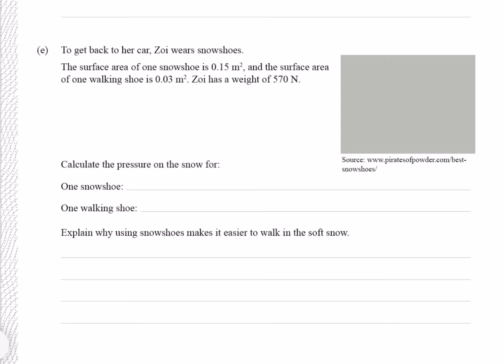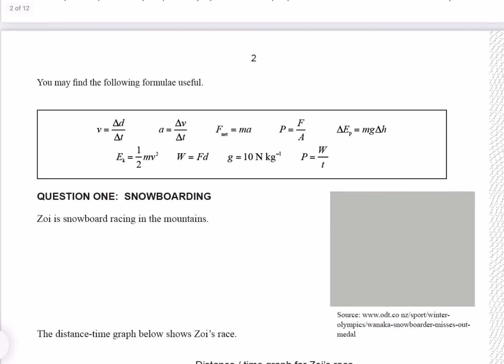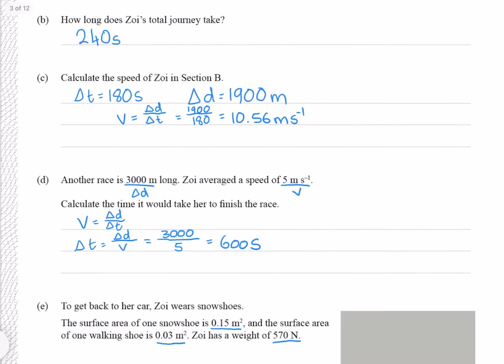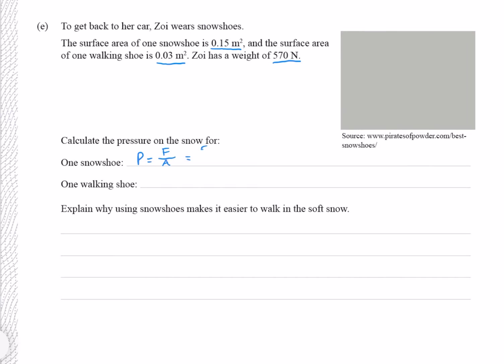To get back to her car, Zoe wears snowshoes. The surface area of one snowshoe is 0.15 meter squared, and the surface area of one walking shoe is 0.03 meter squared. Zoe has a weight of 570 Newtons. Calculate the pressure on the snow for one snowshoe and one walking shoe. Pressure is force divided by area. Our force is 570 Newtons, and the area of our snowshoe is 0.15, which gives me 3800 Pascals. Doing the same for our walking shoe, our weight is the same, but our area is now 0.03, and that gives me 19,000 Pascals.